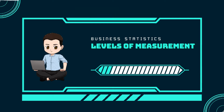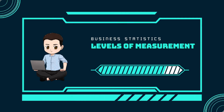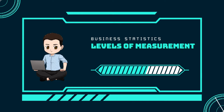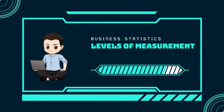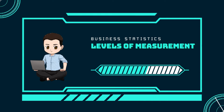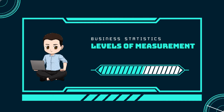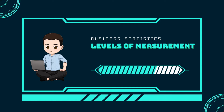Data that is measured using an ordinal scale is similar to nominal scale data, but there is a big difference: ordinal scale data can be ordered. An example of ordinal scale data is a list of the top five national parks in the United States. The top five national parks can be ranked from one to five, but we cannot measure differences between the data.